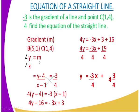The equation of a straight line uses: gradient equals change in y over change in x. The gradient we calculated is negative three-quarters. Setting up the equation with an unknown coordinate (x, y) and known point C (1, 4): (y minus 4) divided by (x minus 1) equals negative three-quarters. You then cross-multiply.